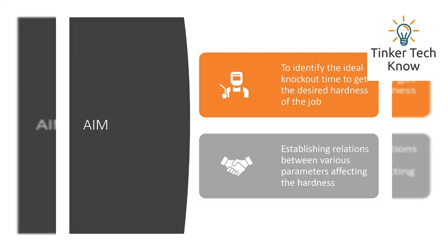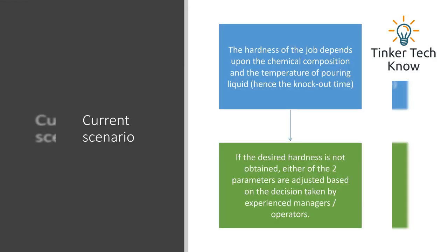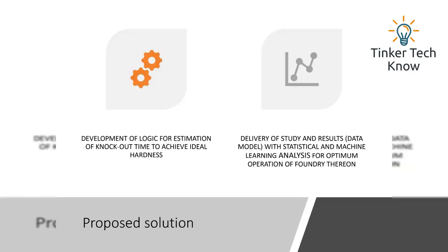To identify the ideal knockout time to get the desired hardness of the job and establish relations between various parameters affecting hardness — this is the current scenario. Critical parameters affecting ideal hardness of the job are chemical composition and pouring temperature of the liquid. Experienced managers take a call using available data and adjust either of the two parameters for expected outputs. The goal is to develop a logic for estimation of knockout time and establish a continuously iterating data model for optimization.